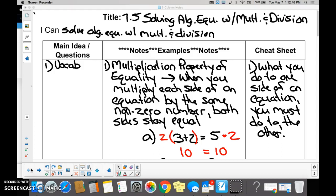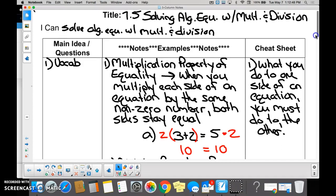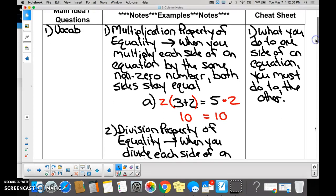We talked about two properties today. The multiplication property of equality, which states if you multiply one side of the equation by a number, you must multiply the other side. So in this situation, we had 3 plus 2, and we had 5, right? We multiply this by 2, we multiply this by 2, and they both ended up being 10.